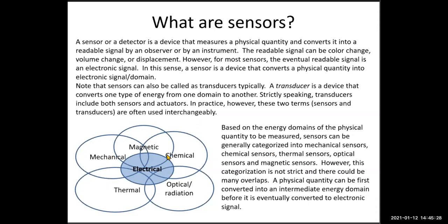Based on the energy domain of the physical quantity to be measured, a sensor can be categorized into mechanical sensors, magnetic sensors, chemical sensors, optical or radiation sensors, and thermal sensors. However, this categorization is not strict and there could be many overlaps.